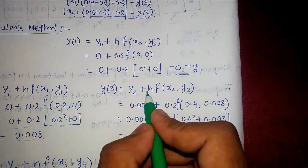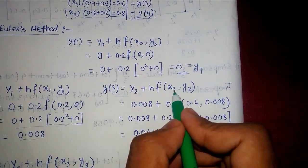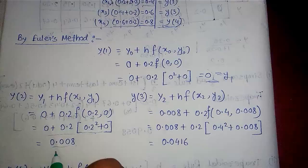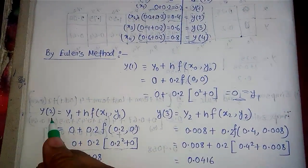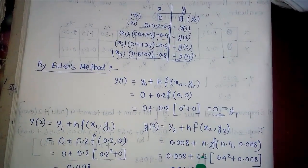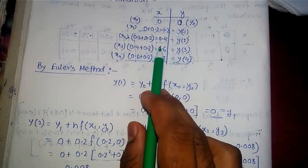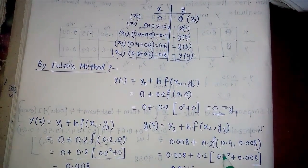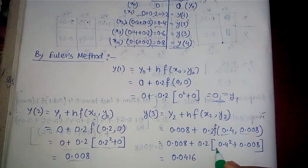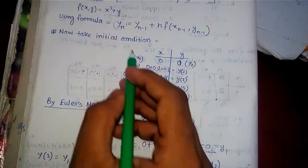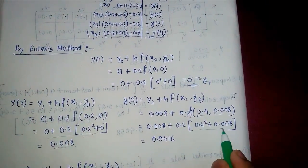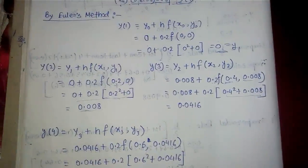After that we move to y₃. y₃ equals y₂ plus h times f(x₂, y₂). We use the previous value y₂ we calculated, h remains the same at 0.2, x₂ is 0.4, and y₂ is 0.008. Using the function f(x, y) equals x squared plus y, we substitute those values and compute the answer.